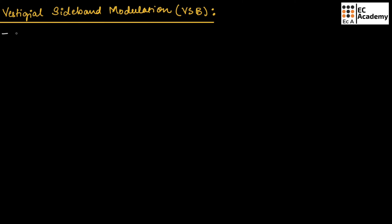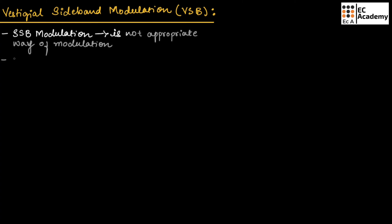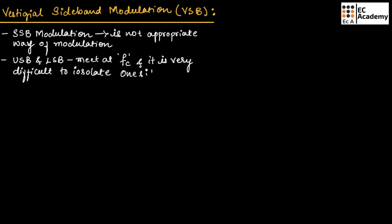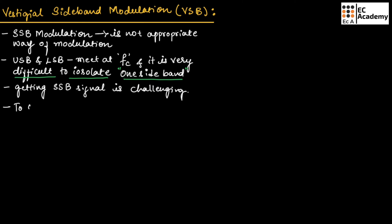In the previous lecture, we understood about single sideband modulation. Single sideband modulation is not an appropriate way of modulation because the upper sideband and lower sideband meet at carrier frequency FC, and it is very difficult to isolate one sideband. Therefore, getting an SSB signal is challenging. To overcome this difficulty, a modulation technique known as vestigial sideband modulation can be used.